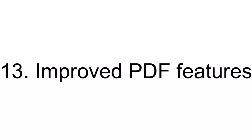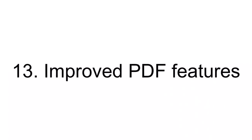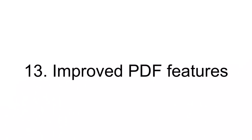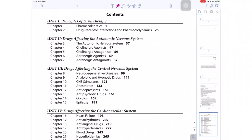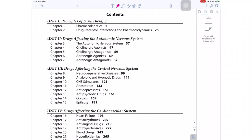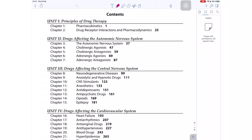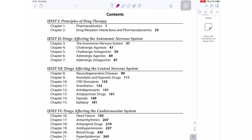Number thirteen, improvements on PDF features. It's just one specific feature: it'll be nice to see outlines in Notability. Not all PDF textbooks have hyperlinks, but most of them have outlines. Having an outline for PDFs would just improve how we work with PDFs in Notability.